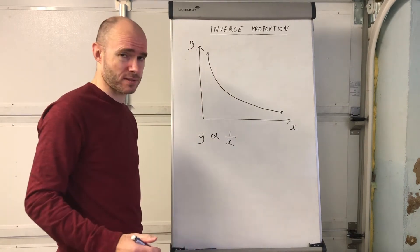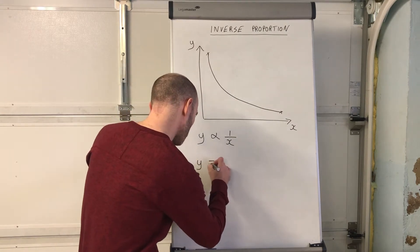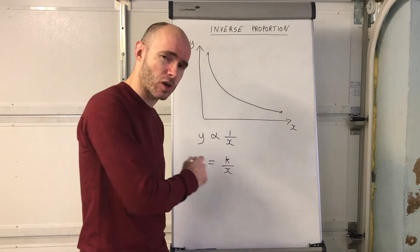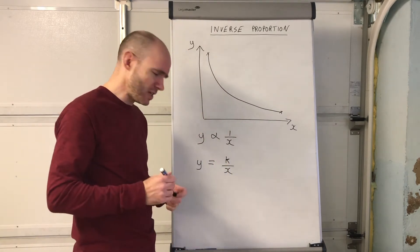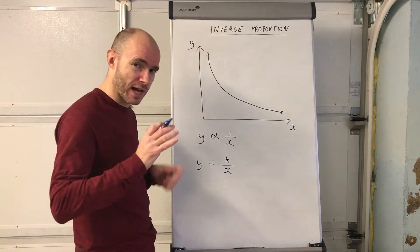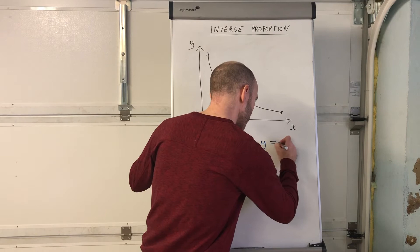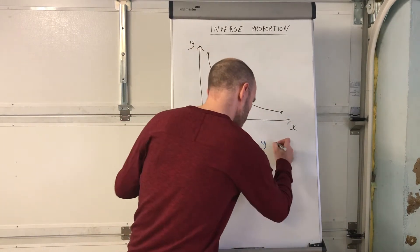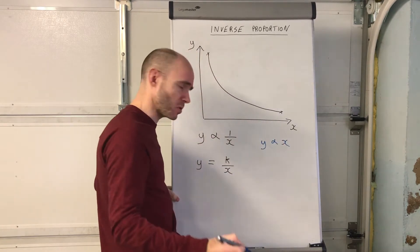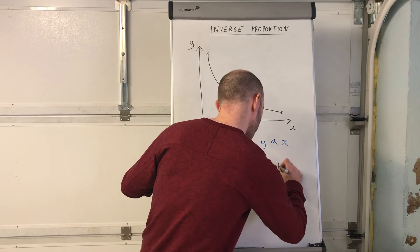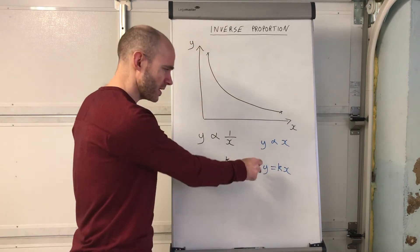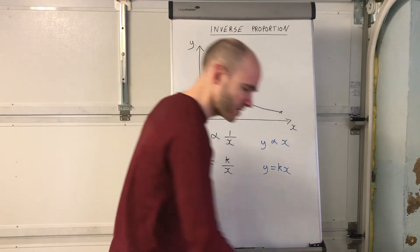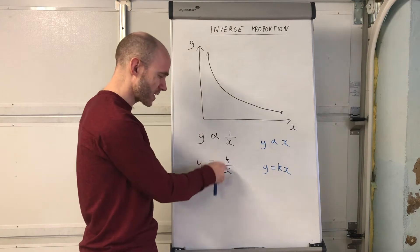The graph of it looks like this, and the equation is of the form y equals k over x, where k is the constant of proportionality. Let's contrast that with direct proportion as a recap. With direct proportion, y is proportional to x, and the equation is y equals kx. But with inverse proportion, y is inversely proportional to x, and it's written as y equals k over x. This is a very typical-looking graph.